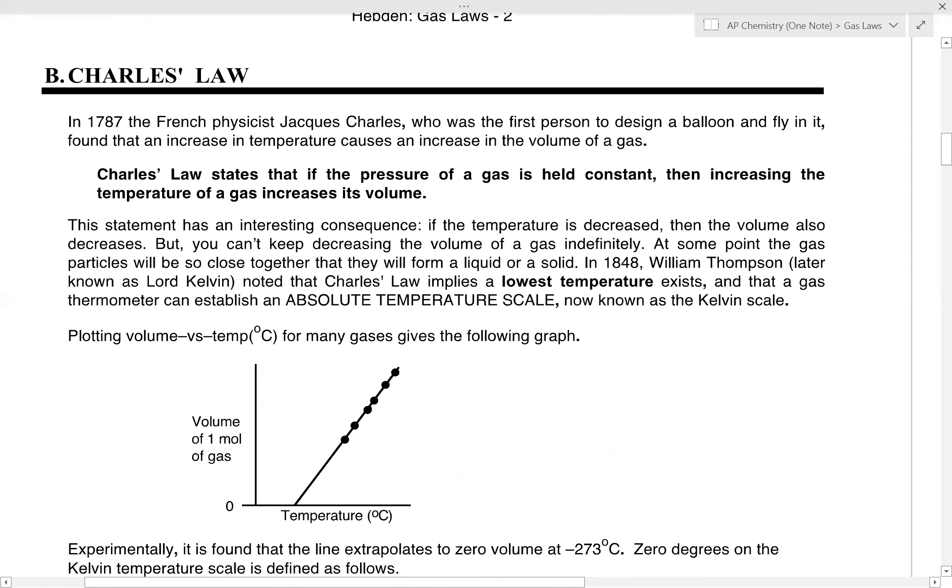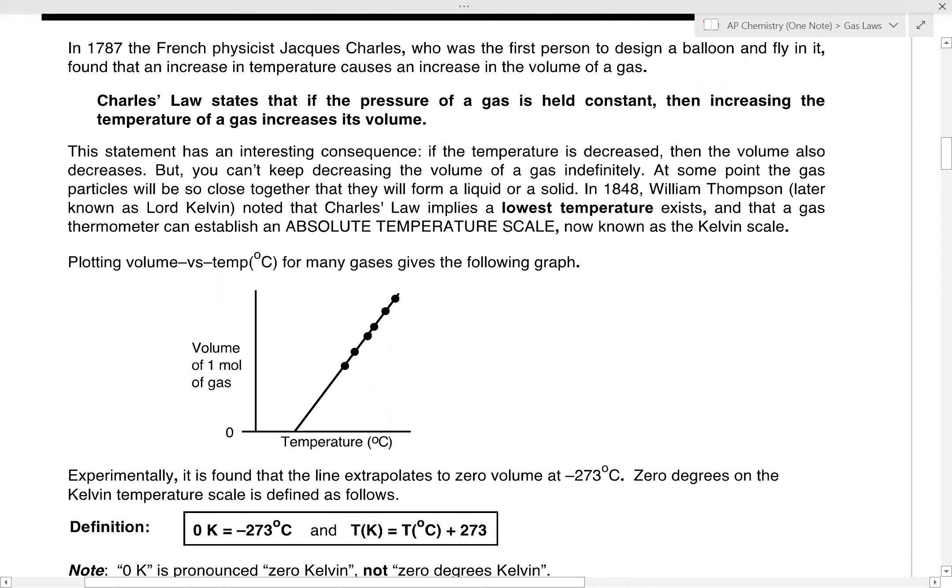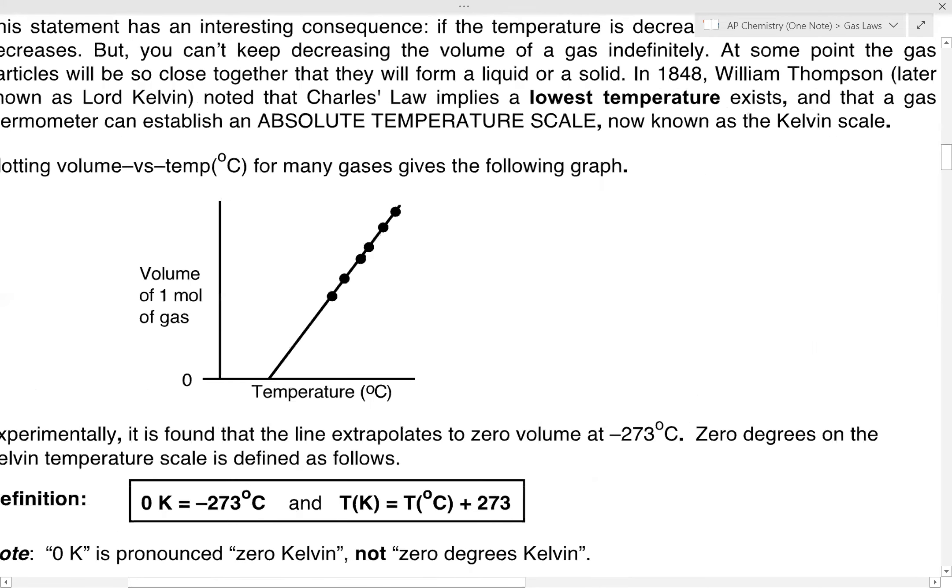The one thing I would like you to be aware of is this: Notice the temperature that they use in this particular axis is degrees Celsius. Make sure you look at this. This is why you notice that the volume of one molar gas is not zero, so it doesn't go through the origin.